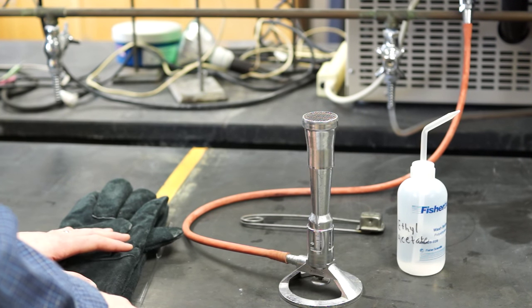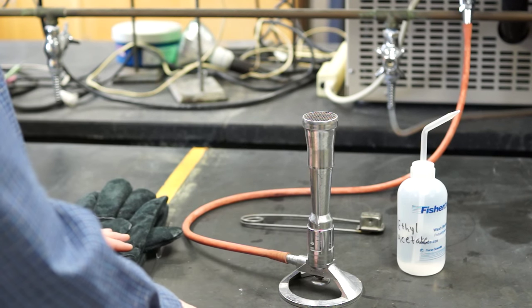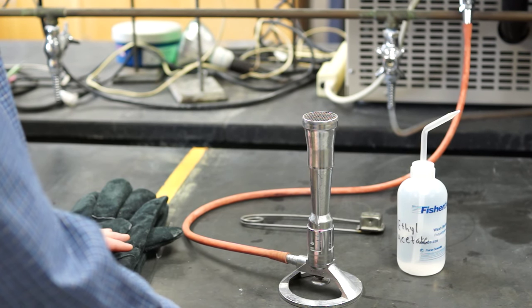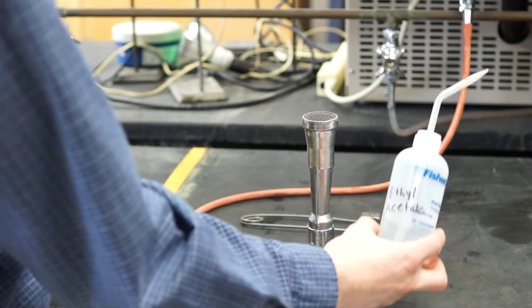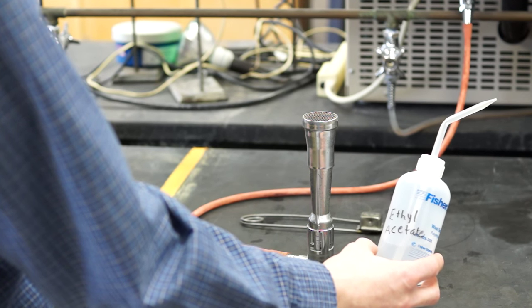To make the spotters, we're going to be using an open flame from a Bunsen burner. It's important to move all organic materials, such as ethyl acetate, out of the way.